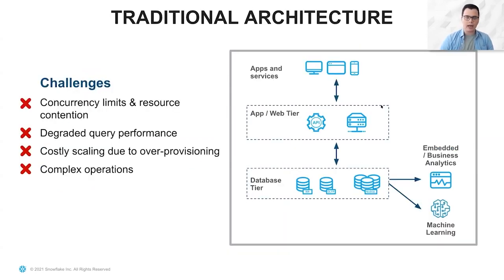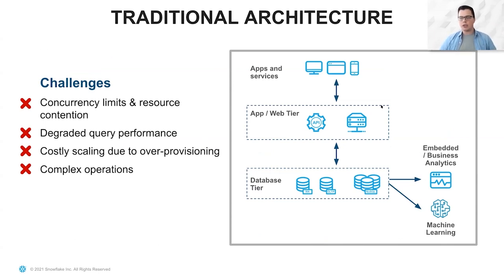So how does this coincide with a traditional architecture and some of the challenges? A traditional architecture is going to have several different layers of your application. One is the apps and services layer — the actual app running on your mobile phone, your desktop computer, or the web application itself. The next piece is the web or app tier, where there's often a REST API. This REST API takes in calls and executes SQL statements to either create, update, or delete data inside of a database. Each of these different tiers have different scaling requirements, and as more users hit your web and app tier, that's going to significantly hit your database tier — a certain level of concurrency where all your users are trying to access data at the same time.